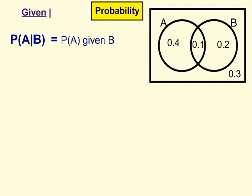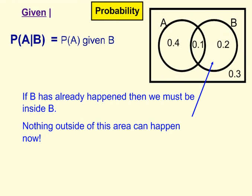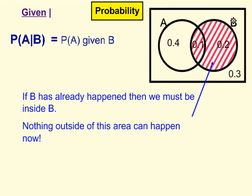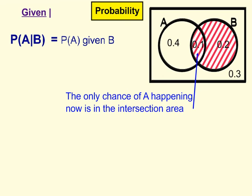We're going to look at conditional probability where this given sign is used. P(A|B) is read as the probability of A given B, which means the probability of A happening given that B has already happened. If B has already happened, then we must be inside B — inside this area here. Nothing outside of this area can happen. The only chance of A happening now is in this intersection area. This part of A can't happen because it's outside of B.